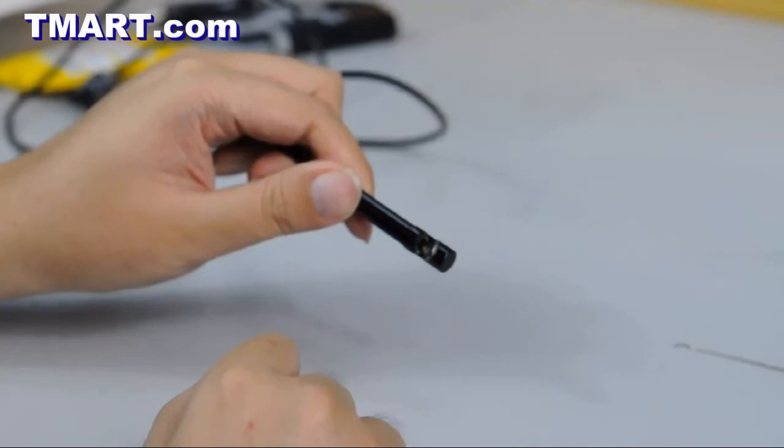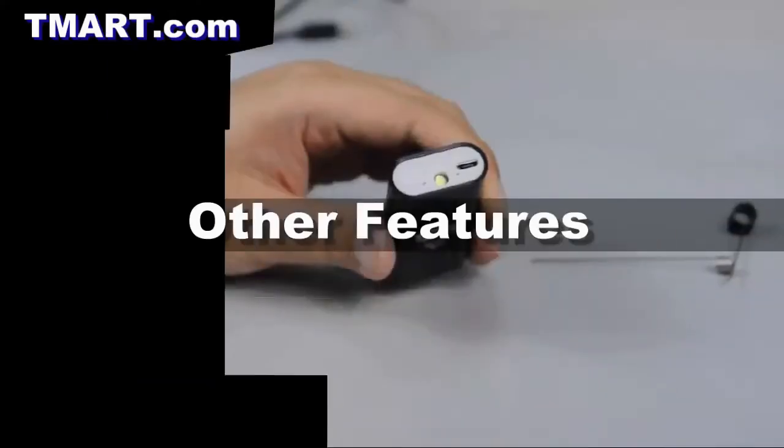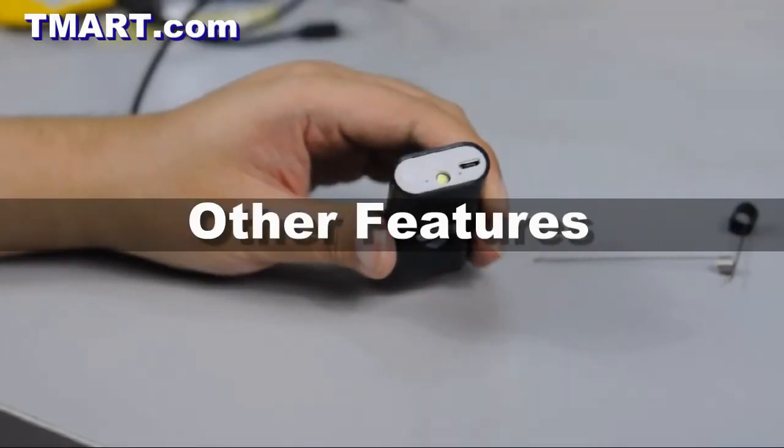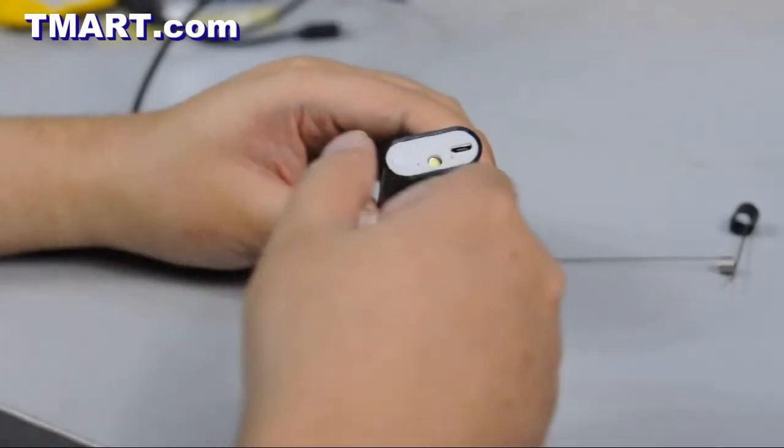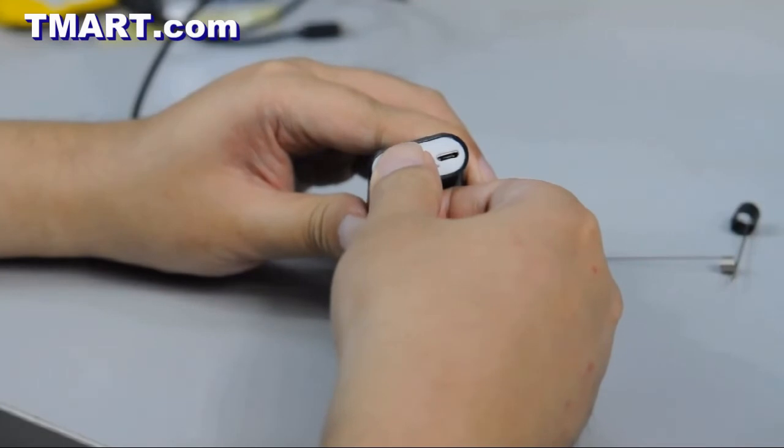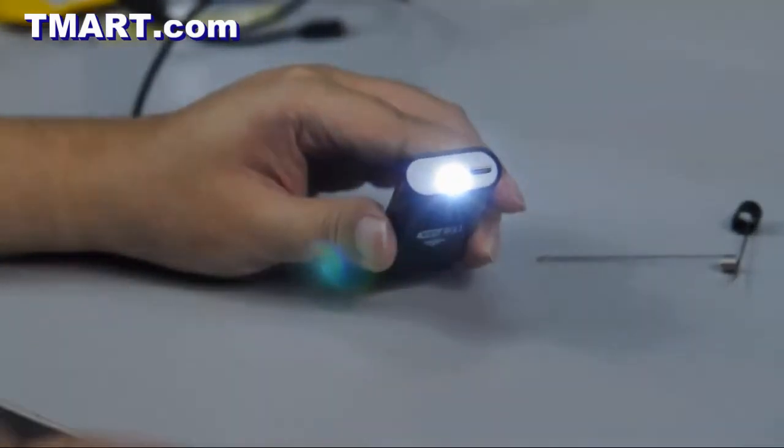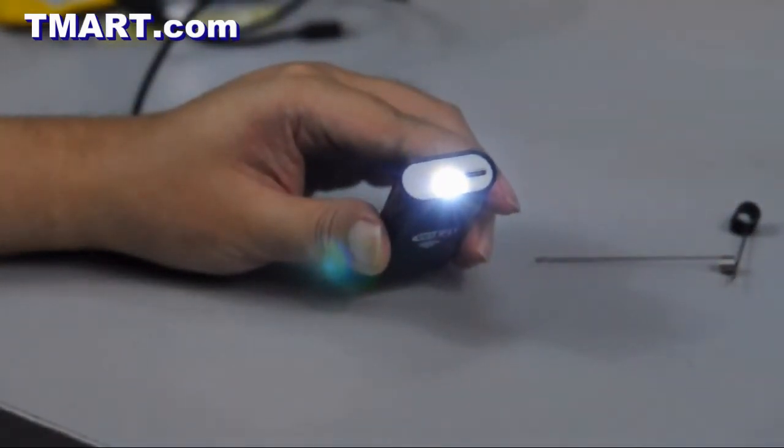The Wi-Fi box also comes with a torch light, which you can enable and disable by pressing and holding the power button. This comes in handy when you are using the camera in a dark environment.